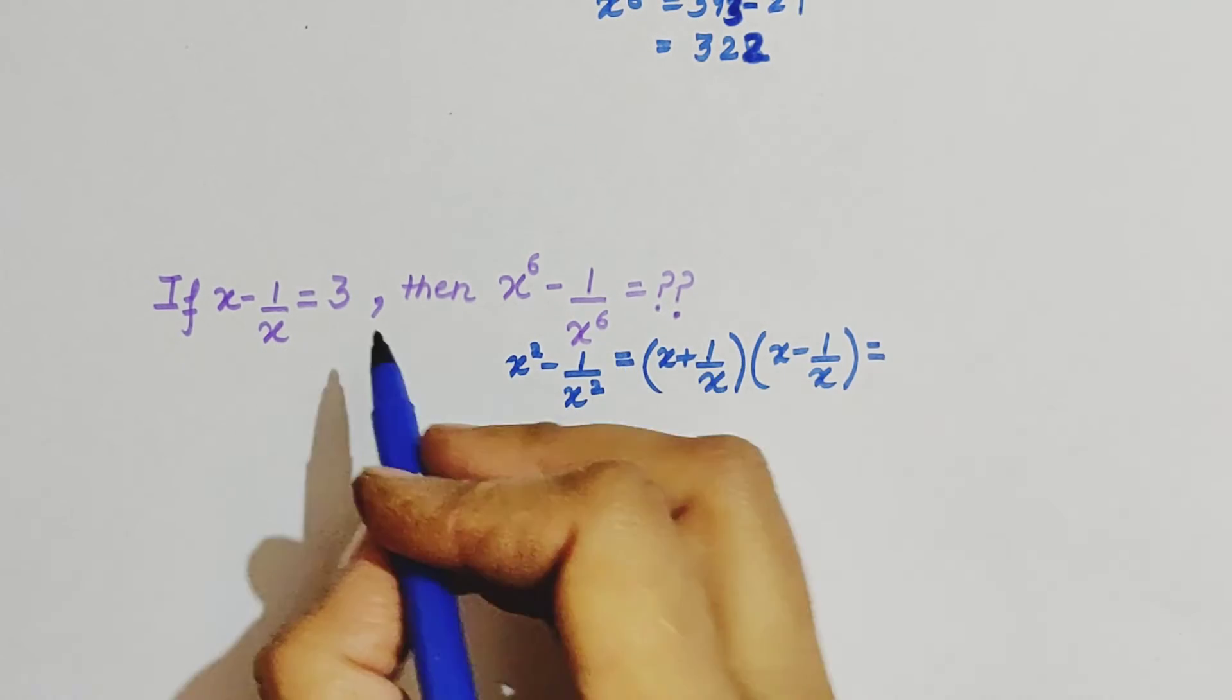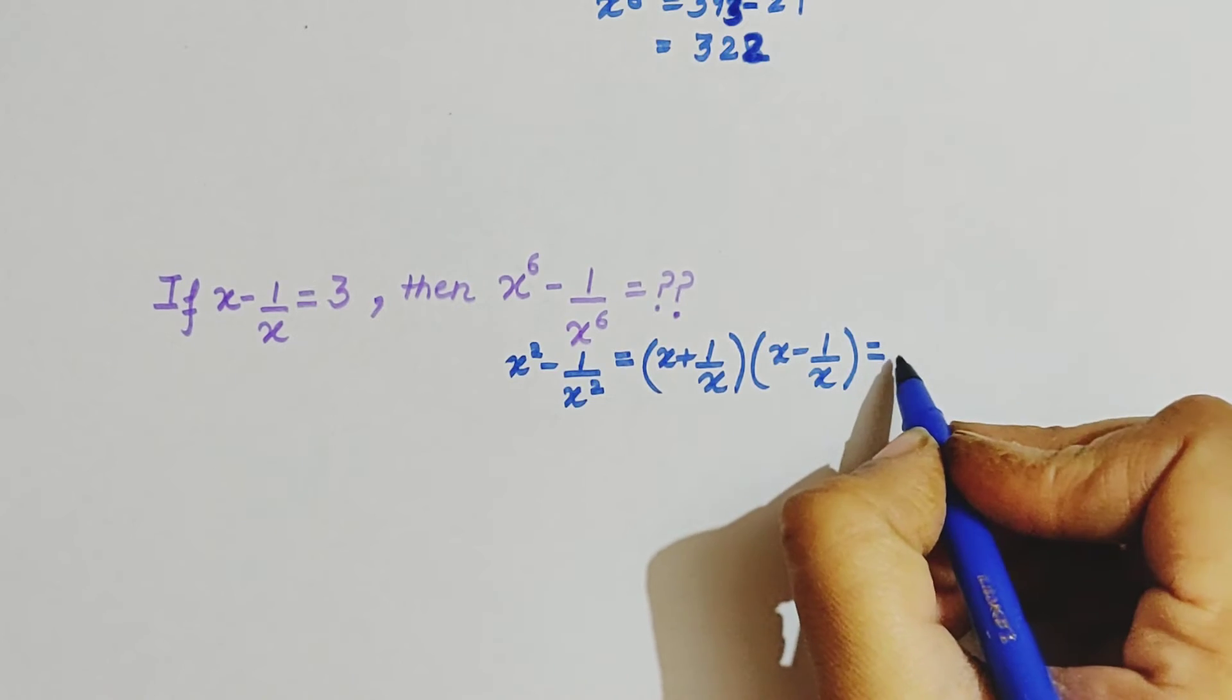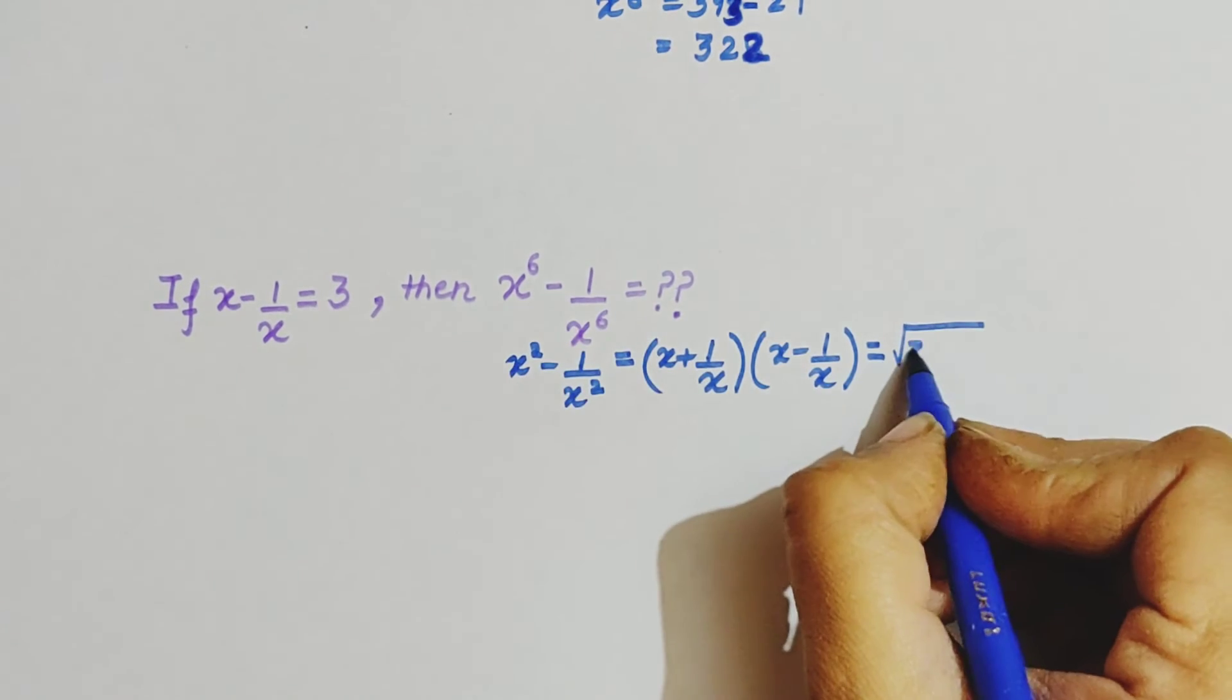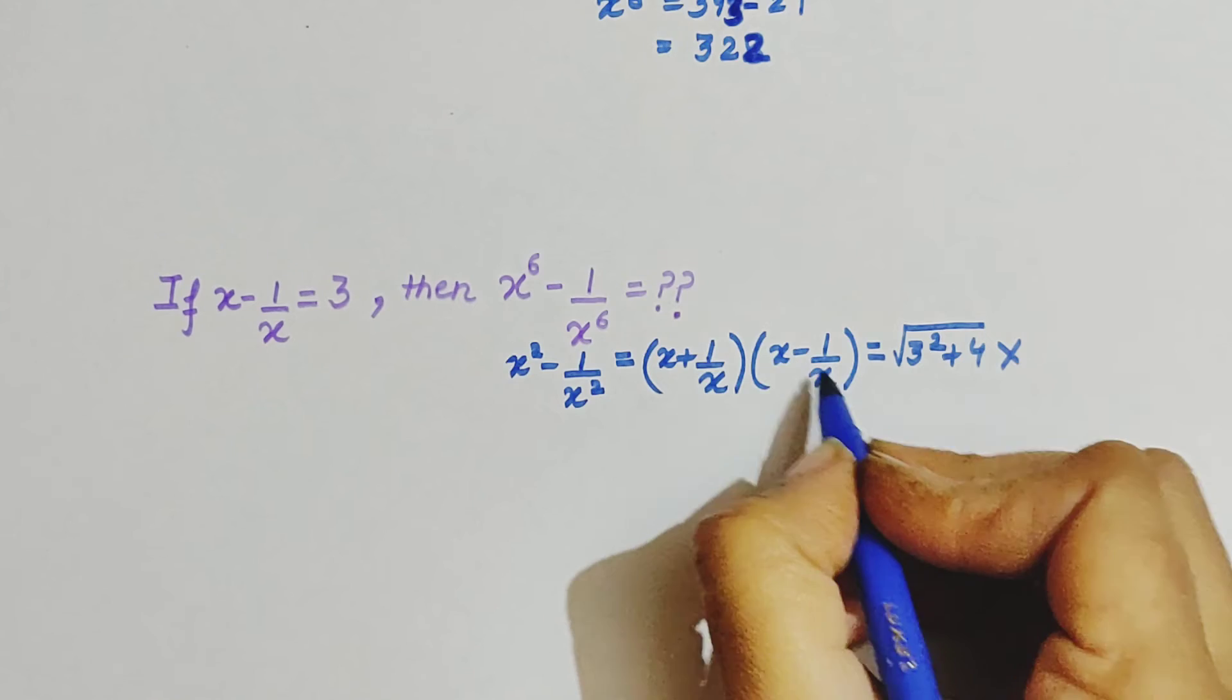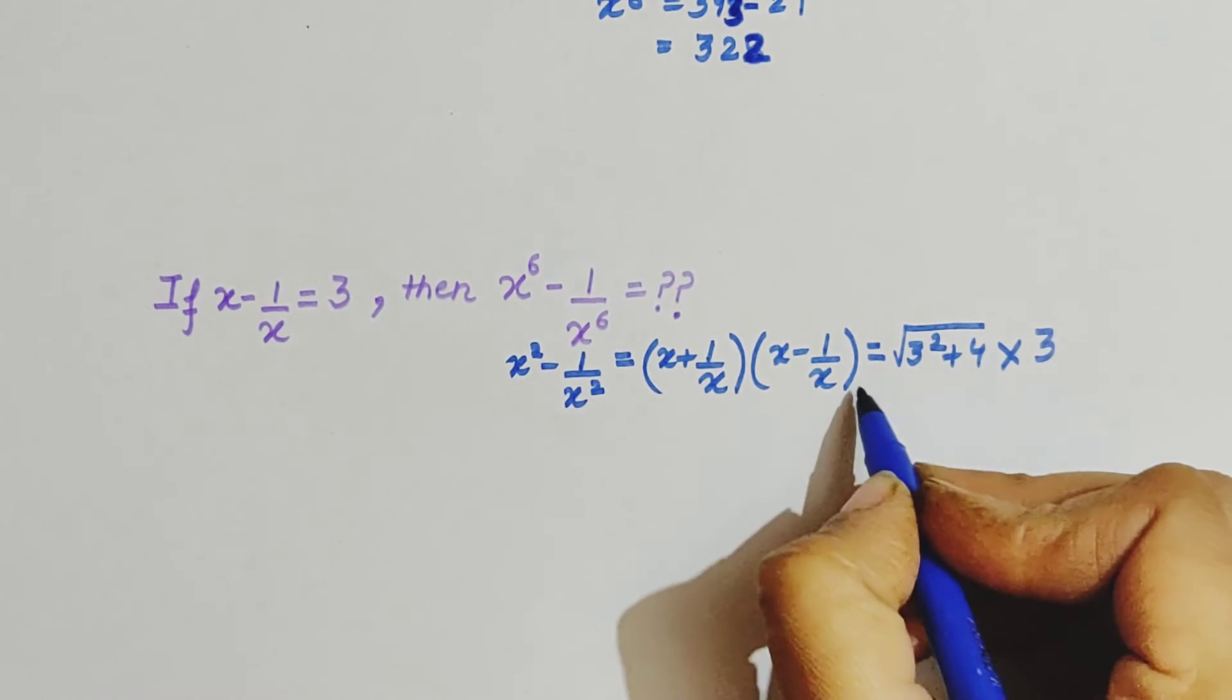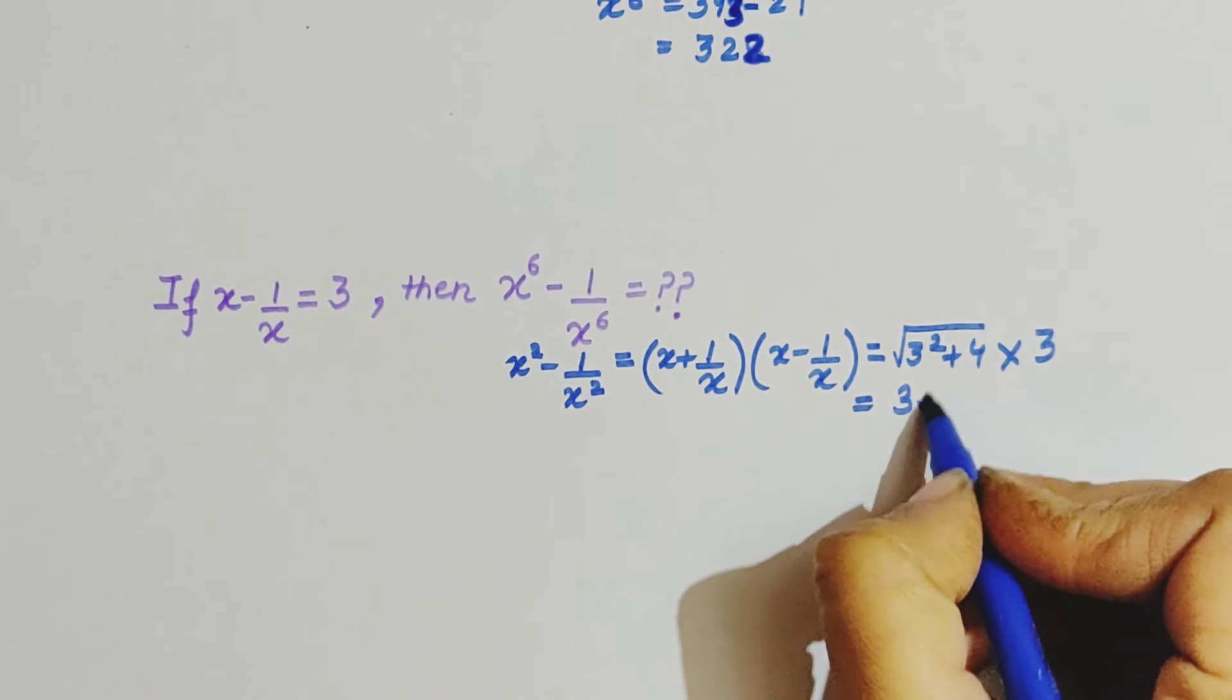This is also explained in the last two videos. So x plus 1 over x we can write as under root 3, 3 square, and since there is plus, we add 4, times x minus 1 over x is 3. So this is 9 plus 4 is 13, so 3 root 13.